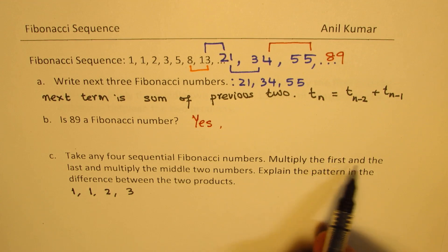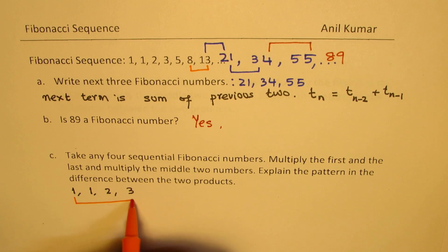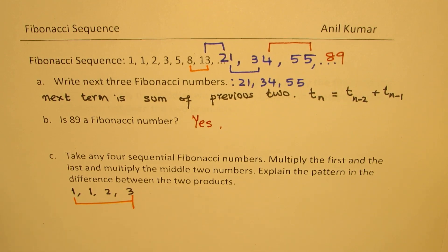Multiply the first and the last. We'll multiply these two. In our case, the first and the last product is 3. Then it says multiply the middle two numbers. When you do that, you get the number 2.